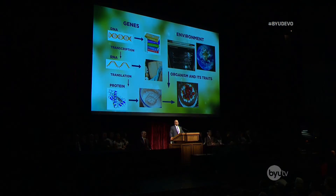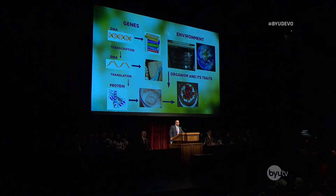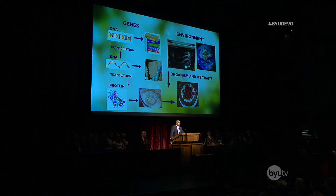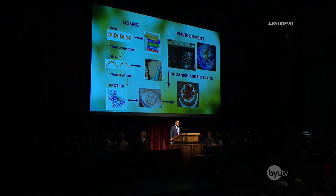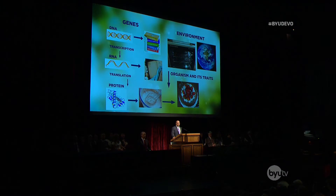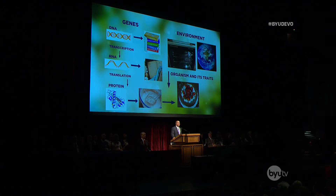When all the ingredients are assembled in the right proportions, you have batter, not cake. Then you use the oven to complete the process of making a cake. The basic process of how genes and environment result in an organism and its traits is similar to this process.